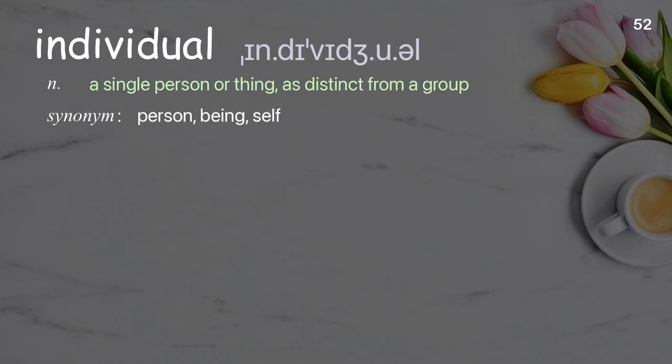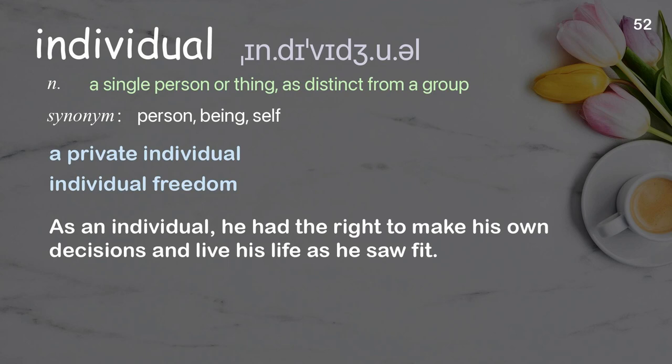Individual: a single person or thing as distinct from a group. Examples: a private individual, individual freedom. As an individual, he had the right to make his own decisions and live his life as he saw fit.